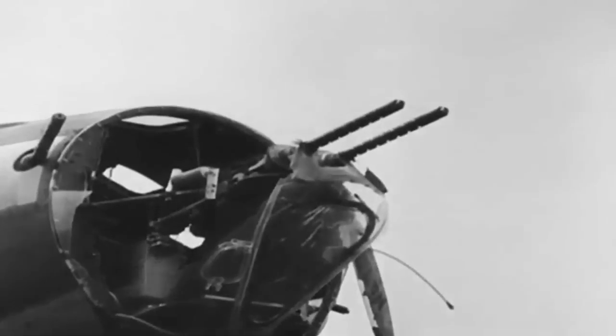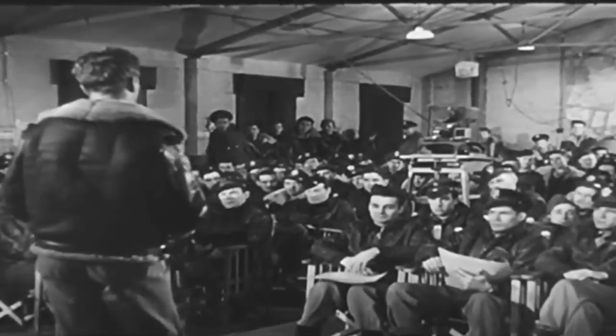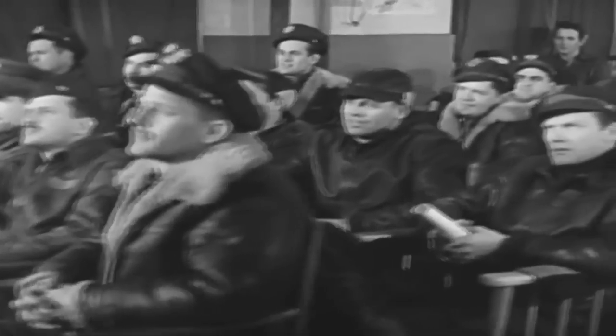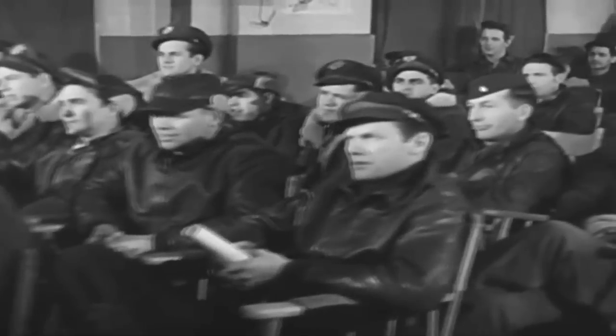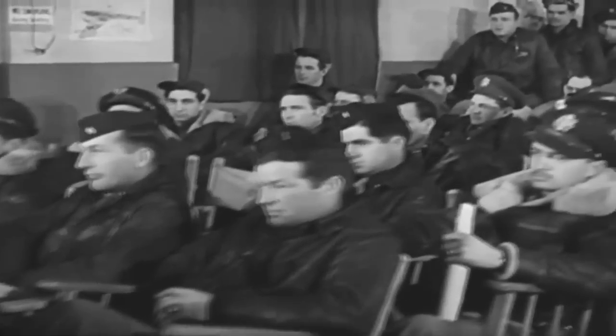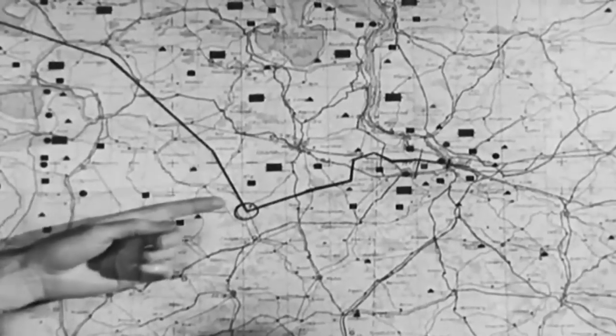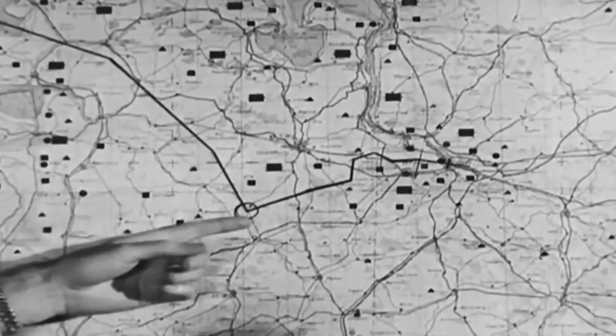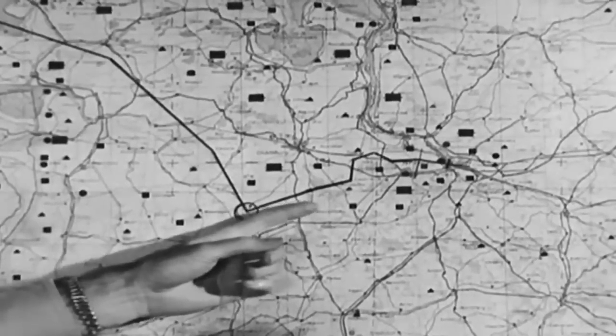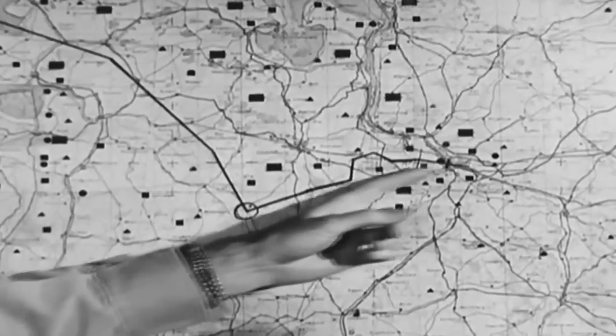Bomber crews are forewarned as to what to expect, specifically. They are told, for instance, to begin taking evasive action three minutes off the enemy coast. It will consist of 20 degree changes in course, made at least every 30 seconds and held for at least 10 seconds. Here, you are to gain a thousand feet in altitude. Arriving at your initial point, make a 90 degree change of course, lose a thousand feet, and continue evasive action until you start your bombing run.